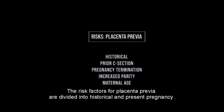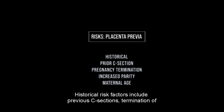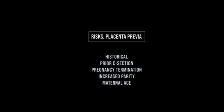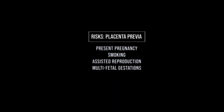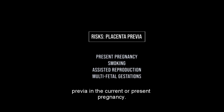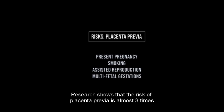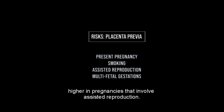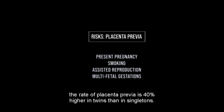The risk factors for placenta previa are divided into historical and present pregnancy. Historical risk factors include previous C-sections, termination of pregnancy, higher parity, and advanced maternal age. Pregnancies involving assisted reproduction, smoking, and multifetal gestation present risks in the current pregnancy. Research shows the risk of placenta previa is almost three times higher with assisted reproduction, and the rate is 40% higher in twins than in singletons.